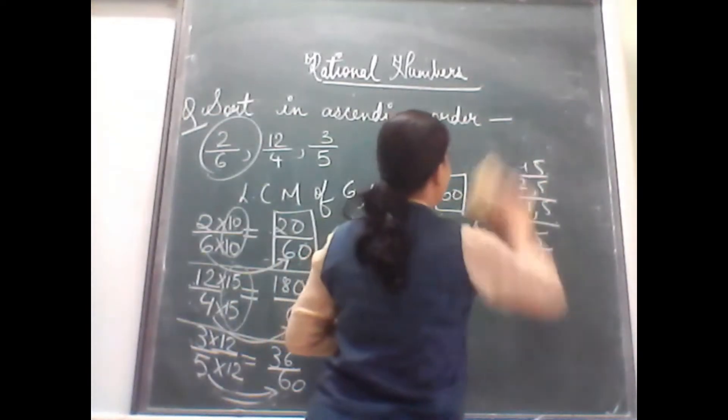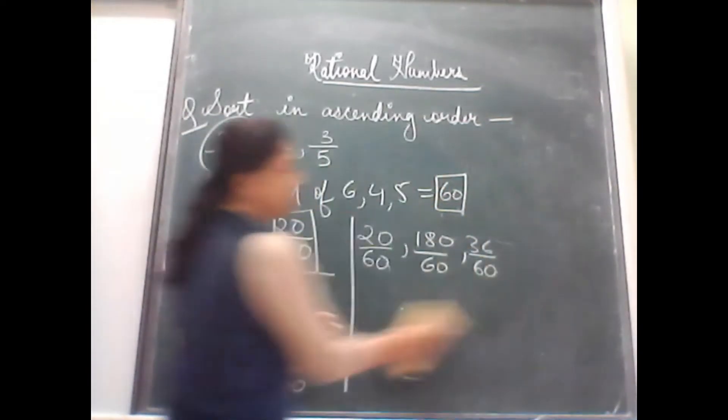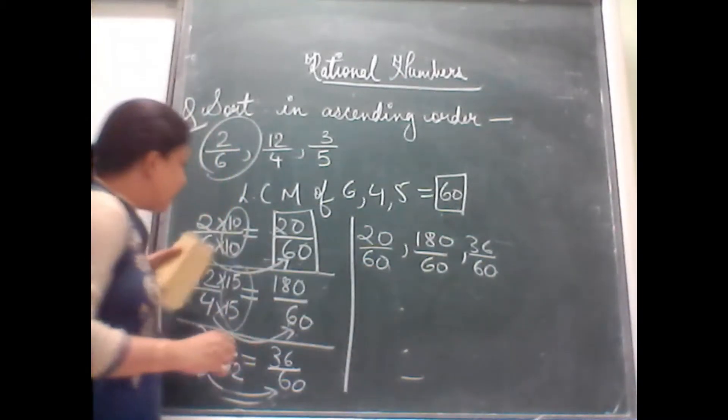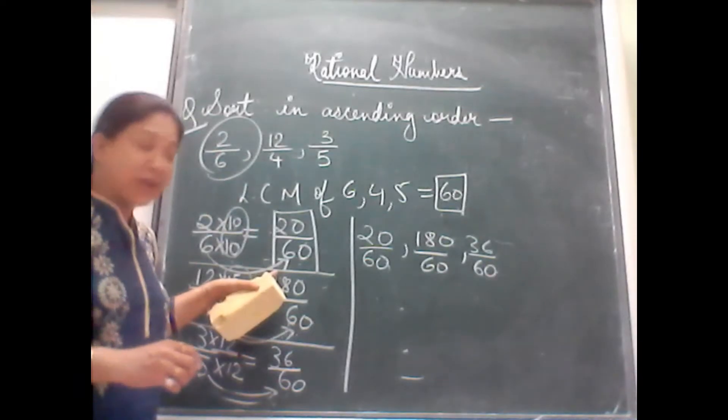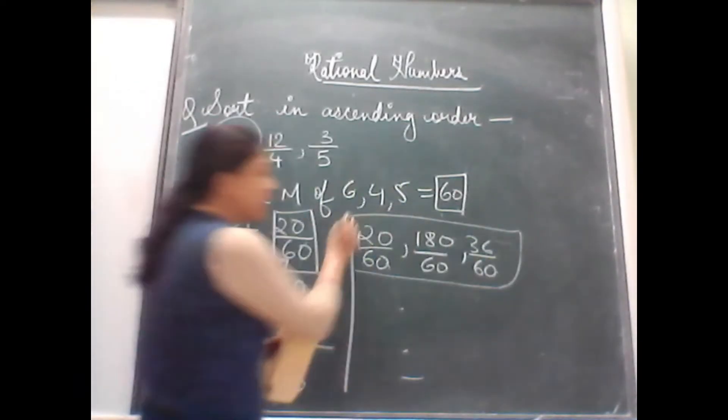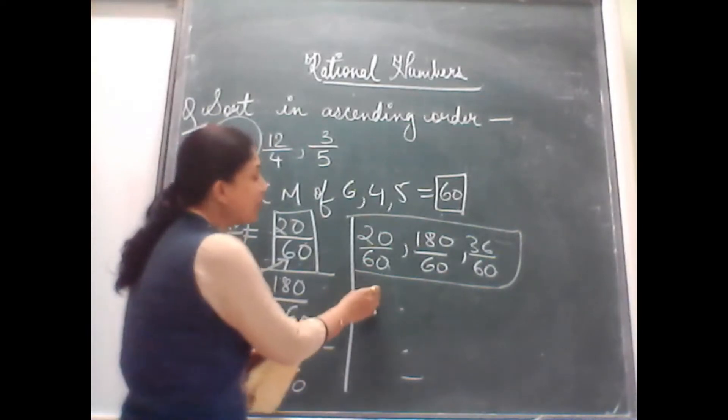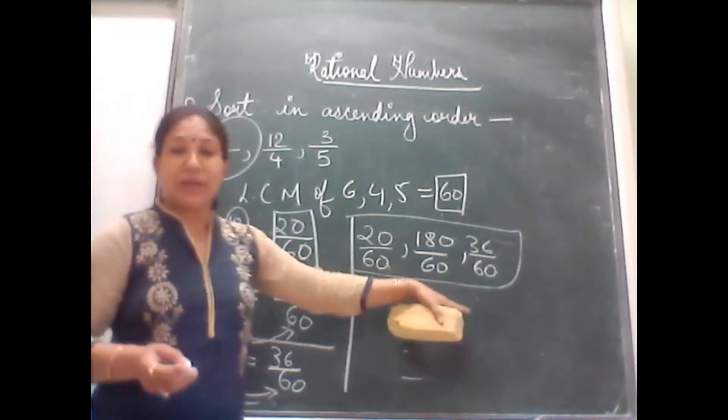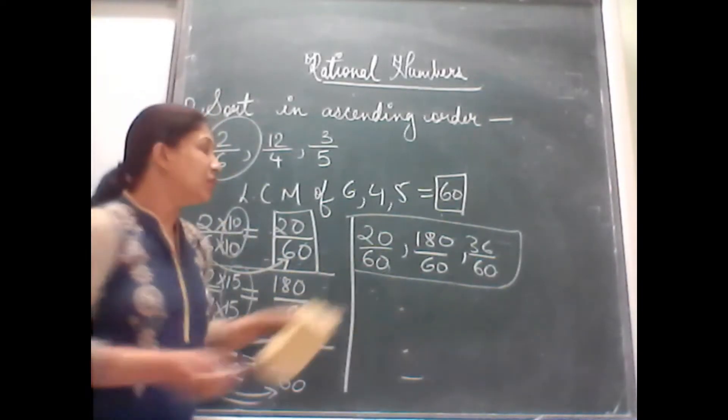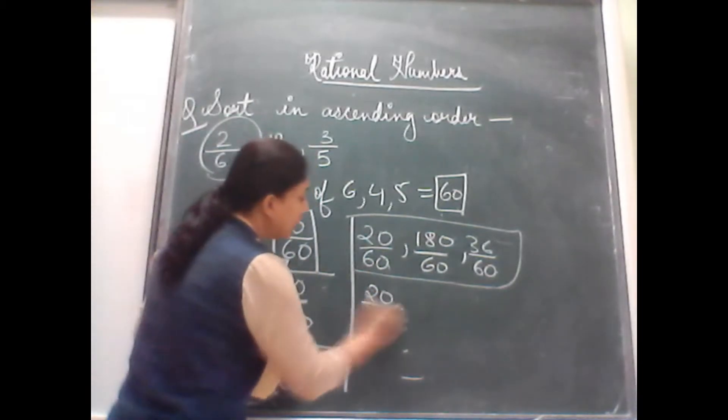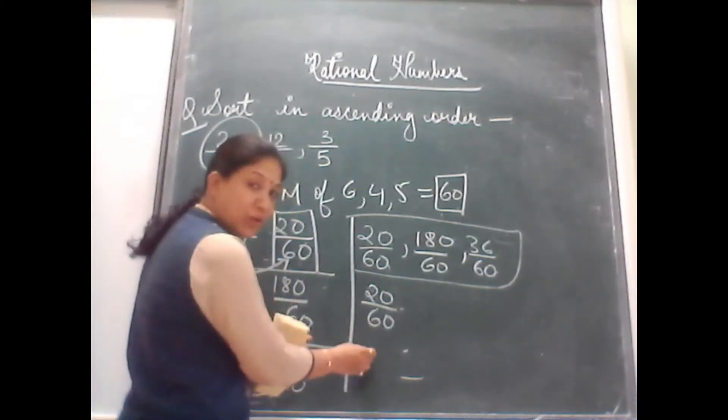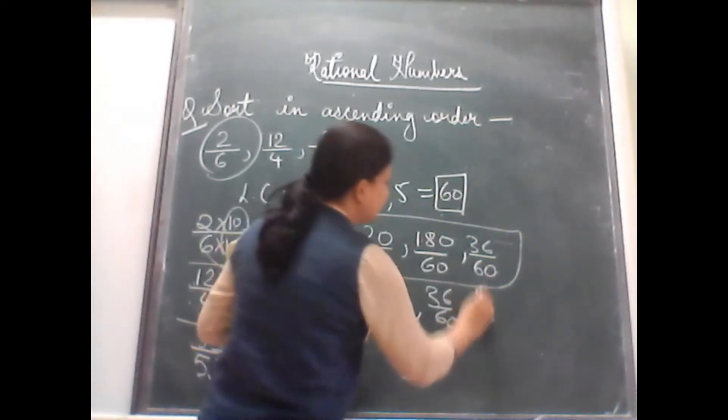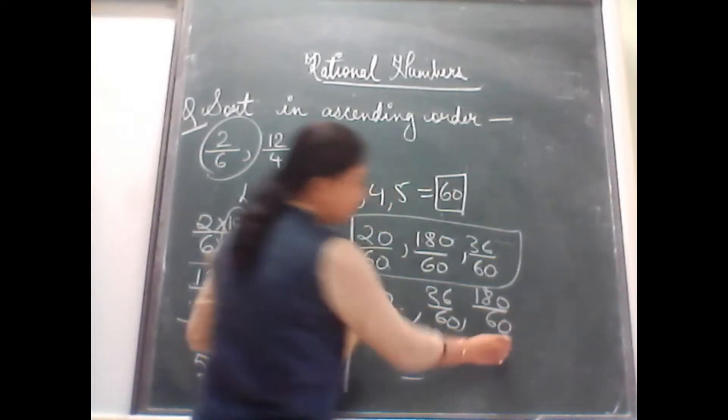Let me rub this part. You have to show the rough work also with pencil. Remember. So now see, once we converted this into equivalent fraction, now we see they are in like terms. So now when they are in like form, it is easy to compare. The denominator is same. Check the numerator. Whichever numerator is smaller, that number will become smaller.